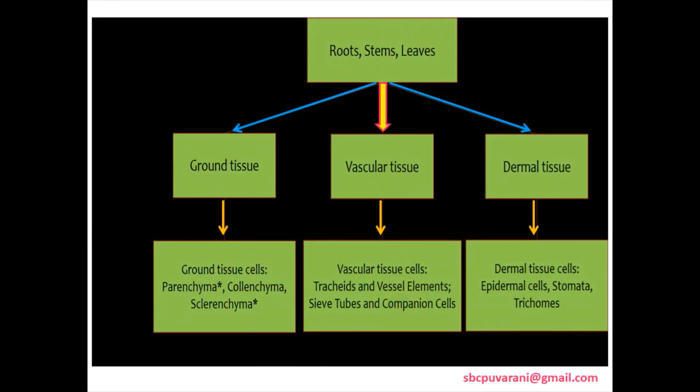Plant tissues are classified into epidermal or dermal tissues, vascular tissues and ground tissues. The ground tissues consist of parenchyma, collenchyma and sclerenchyma. Vascular system consists of xylem and phloem. Dermal tissues consist of stomata and trichomes.